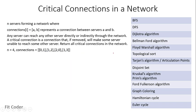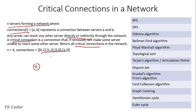The next question is critical connections in a network. We have N servers forming a network, where connections[i] means there is a connection between servers A and B. Any server can reach any other server directly or indirectly through the network. A critical connection is one that if removed will make some server unable to reach some other server, and we have to find all critical connections.